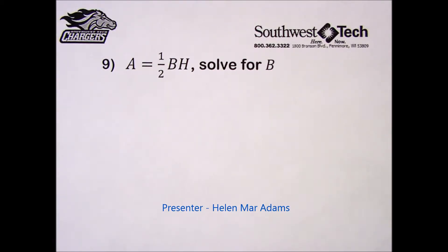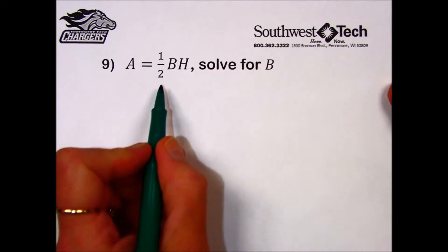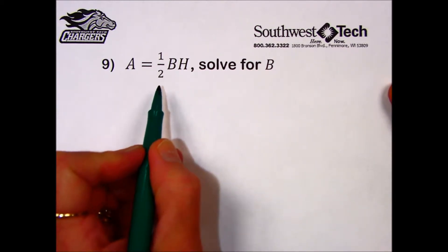Practice set 40. Rearrange the following formulas to solve for the indicated variable. In number 9, they're asking us to solve for B. It involves a fraction though, and that always is a little intimidating.